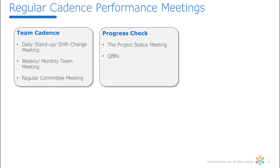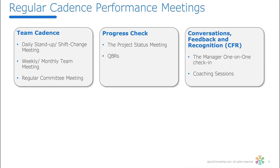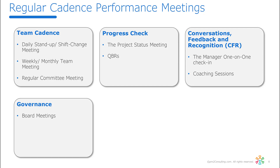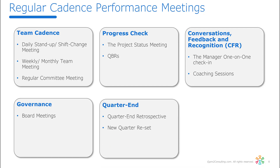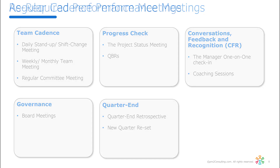We may also have regular scheduled progress checks for large projects running over multiple quarters or years — QPRs populated with OKR information. Then there are one-on-one meetings, conversations, feedback and recognition (CFRs), regularly scheduled coaching sessions, governance meetings like boards, and finally the regular scheduled quarter-end OKR sessions — the retrospective and the new quarter reset meetings.